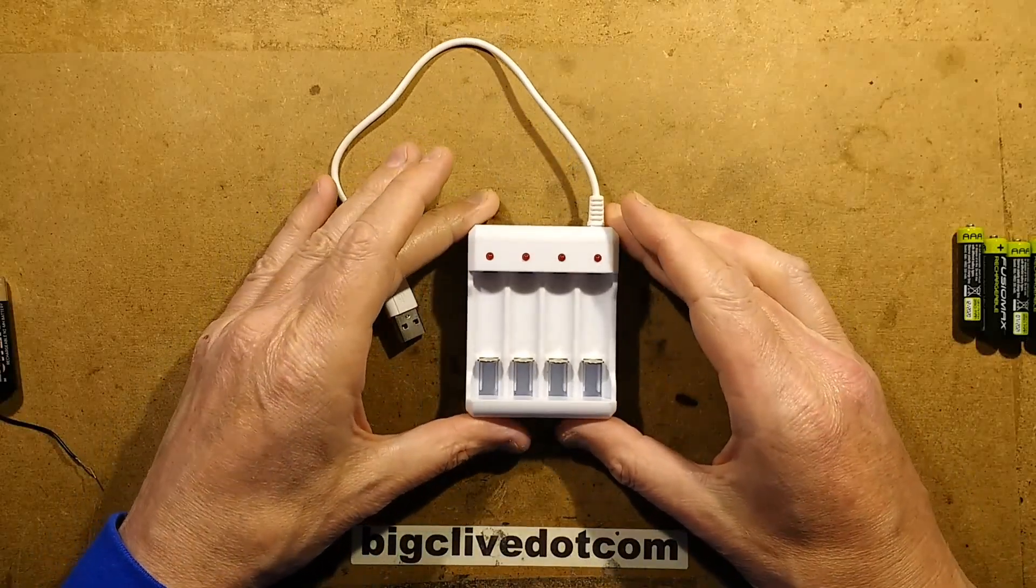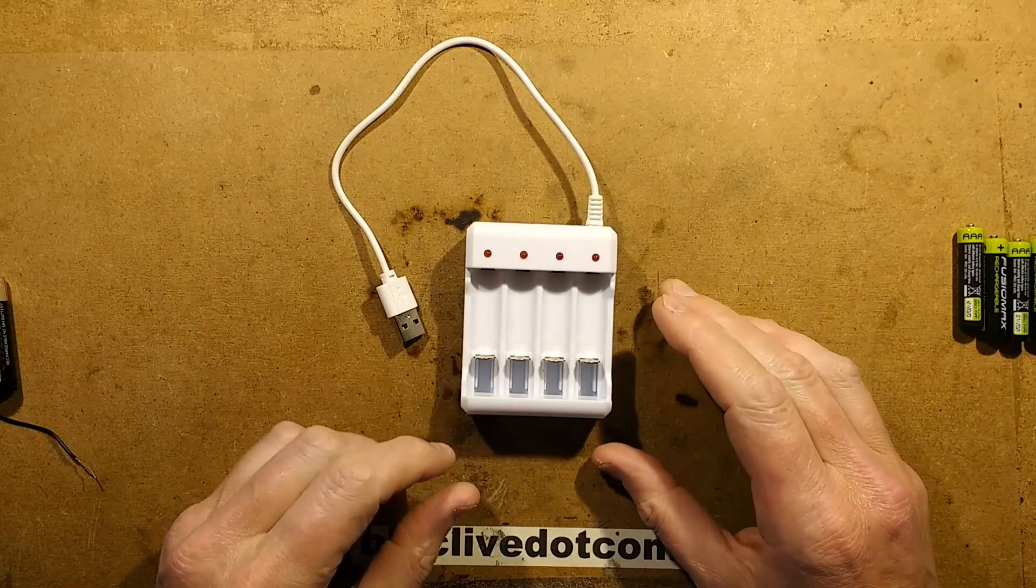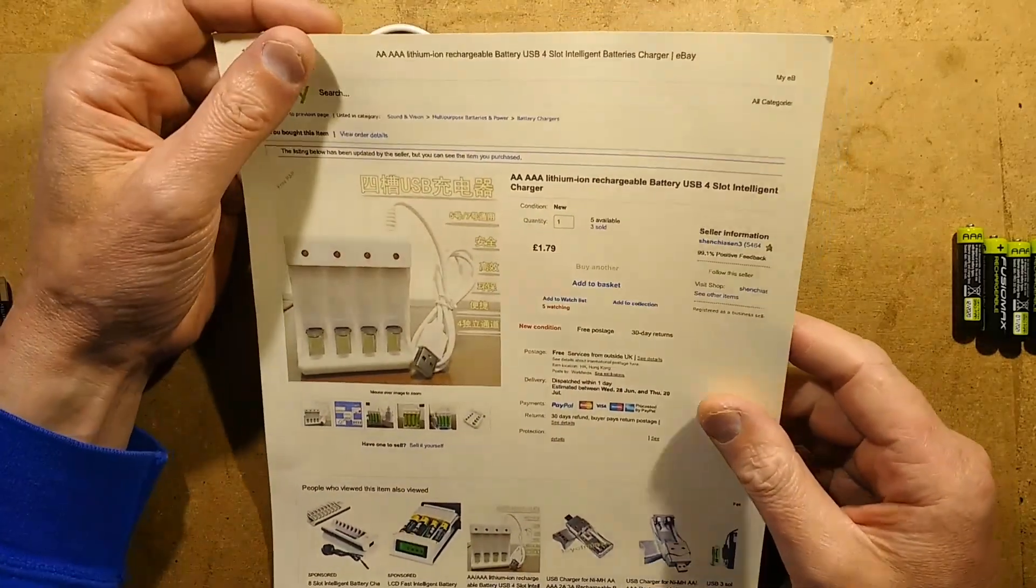One of the best things about cheap shitty products from eBay is you can have lots of fun trying to work out what's inside them before you open them up to see what actually is inside them. So this one costs £1.79 but I see there's a listing down here £1.59.